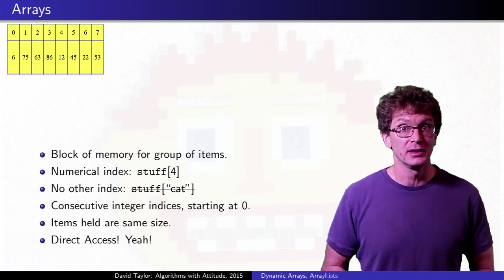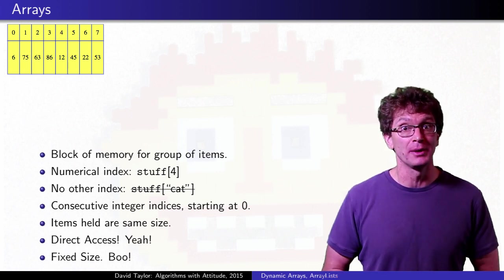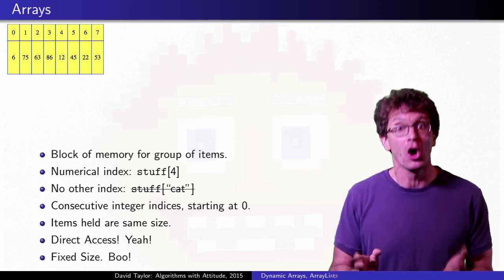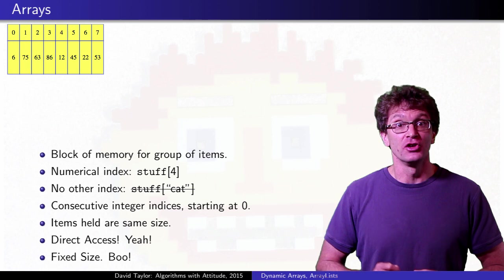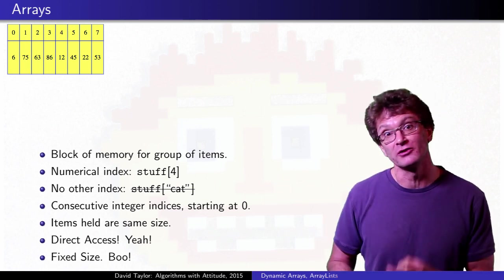Because arrays map directly to your computer memory, you need to specify how large the array will be when you allocate memory for it, which is their weakness. Sometimes you don't know how many spaces you need. If you don't allocate enough space, you will run out of room, but if you allocate too much space, you waste memory.